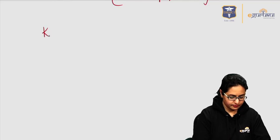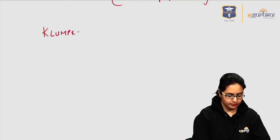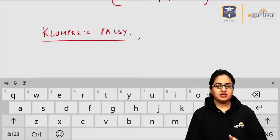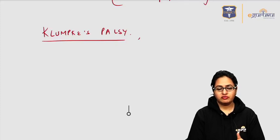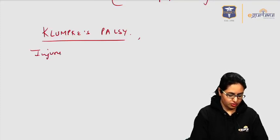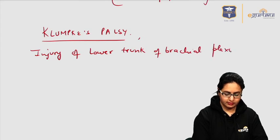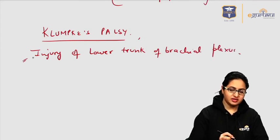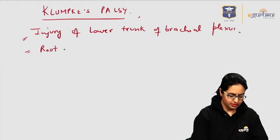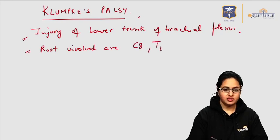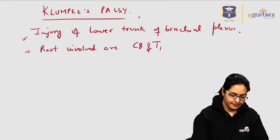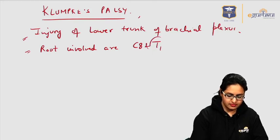Next we come to the Klumpke's palsy. The Klumpke's palsy is specifically due to the injury of the lower trunk of the brachial plexus. Because the lower trunk is involved, the roots which are involved are C8 and T1, and among these two, the T1 nerve root is the one which is mainly involved.